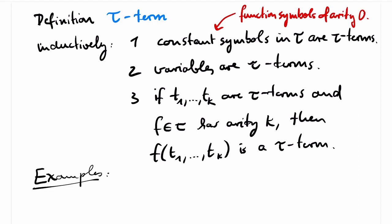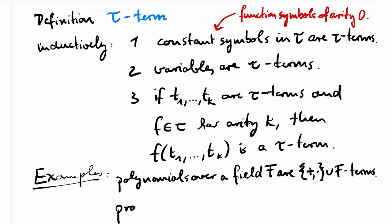For example, polynomials over a field F are terms over the signature that contains plus and times, but also contains a constant symbol for each field element for the coefficients of the polynomial. You might also recognize propositional formulas as terms for the signature that contains a symbol for conjunction, negation and top.